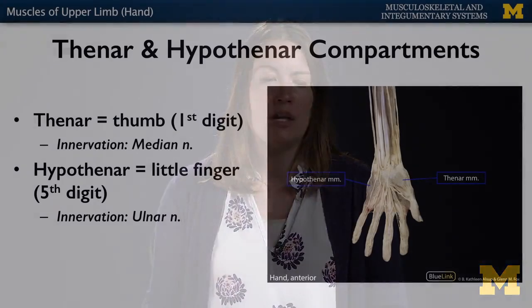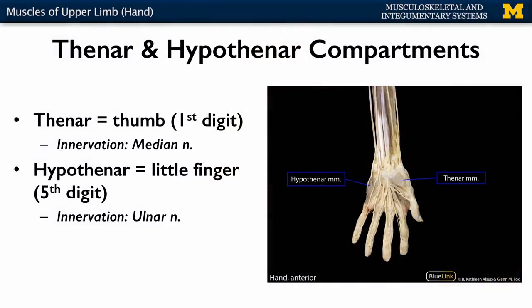In terms of the more distal components of the upper limb skeletal muscle, let's talk about the hand. This is a fairly complex region with a lot of muscles, but they're more compartmentalized. We'll discuss compartments, and hopefully it won't be too overwhelming.